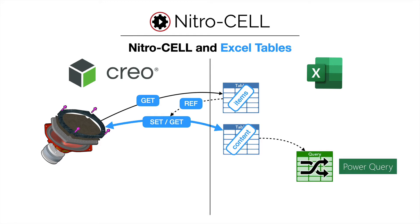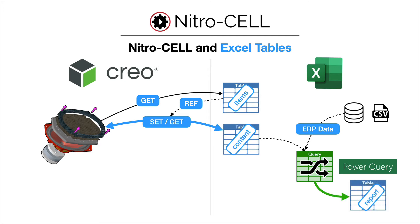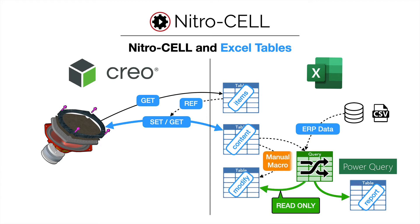Once you've got data in a tabularized format within Excel, that opens up Power Query, which is a standard module that comes with Excel. Power Query can be used to augment that data and merge it with ERP data, for example, by connecting to a database, importing a CSV file, or referencing other tables within the same or across multiple workbooks. Power Query can also generate reports and summaries of things that need to be changed within Creo, or generate a table that needs to be modified to pass data back into Creo upon final execution.